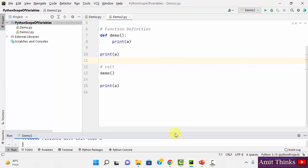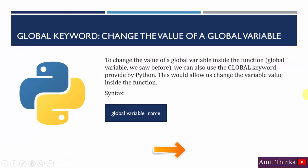Now let's see how we can change the value of a global variable. We saw that we declared a variable and accessed it anywhere because it was global. But we can also change the value of a global variable using the global keyword. The syntax is: just write the global keyword, then the name of the variable you want to change the value of. Let us see another example.